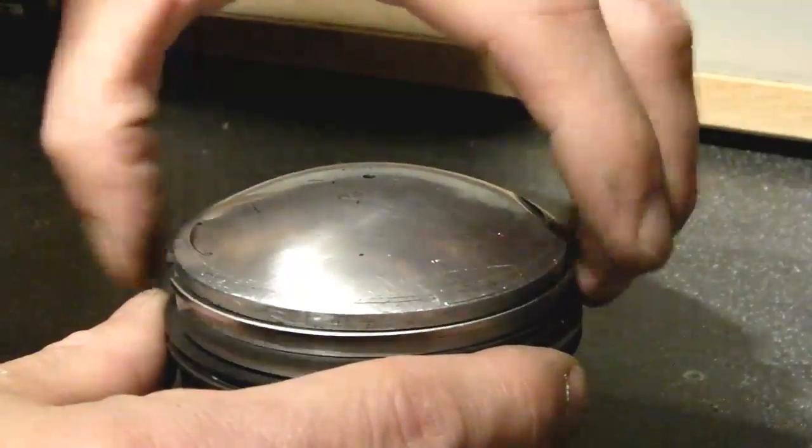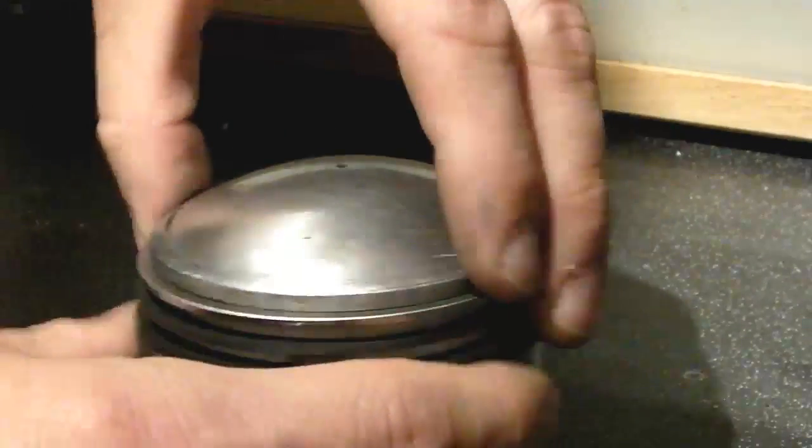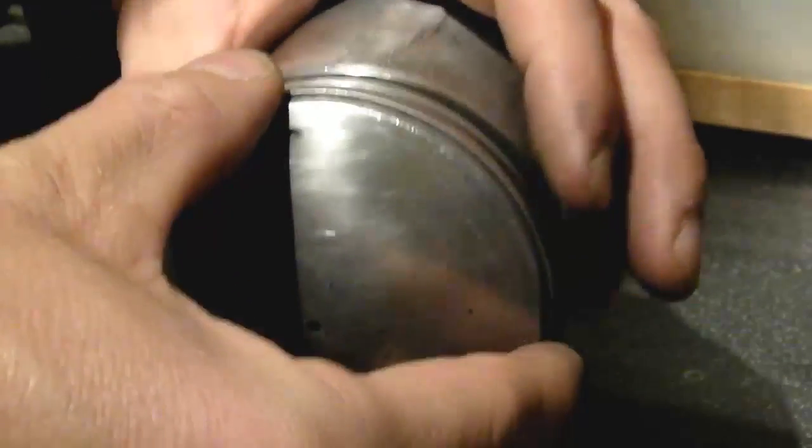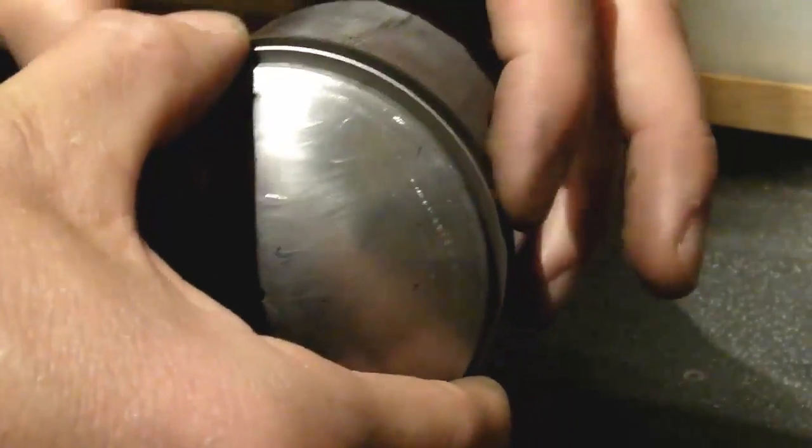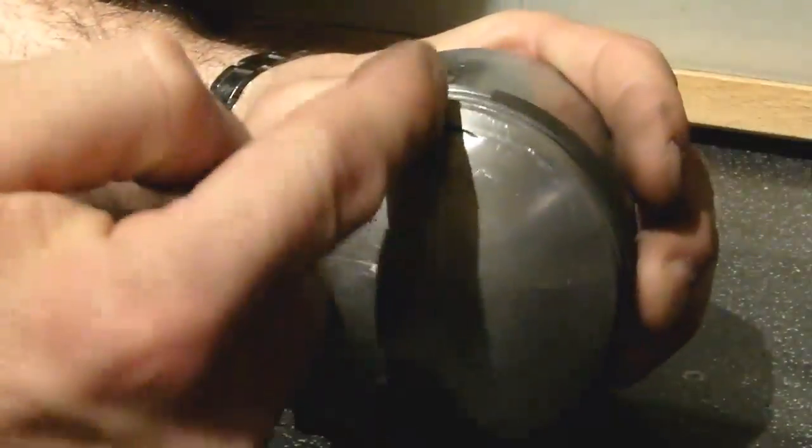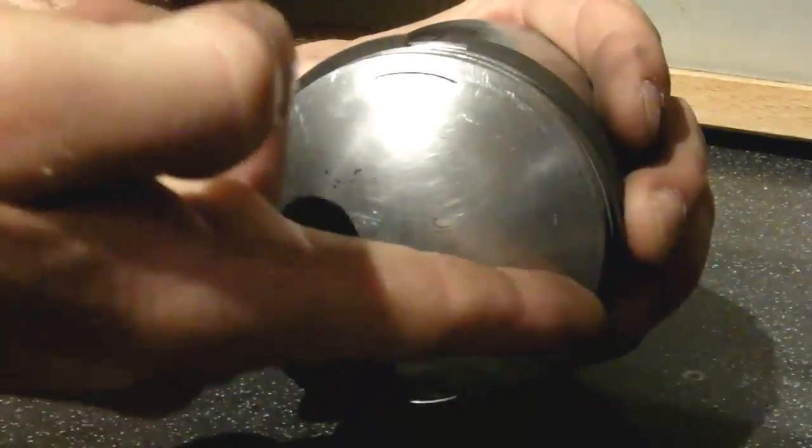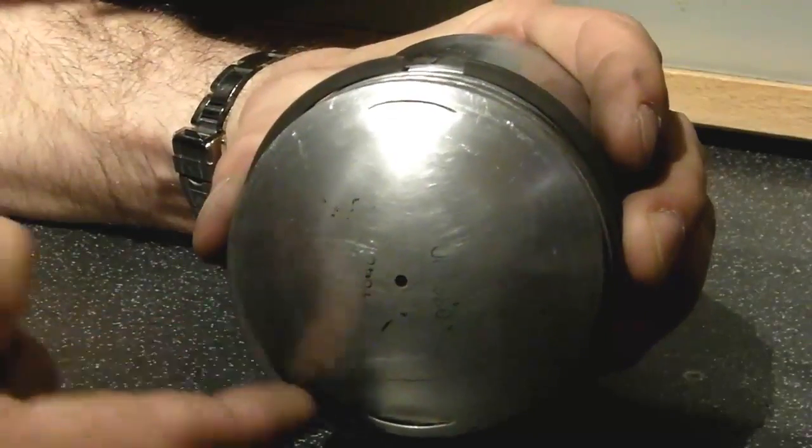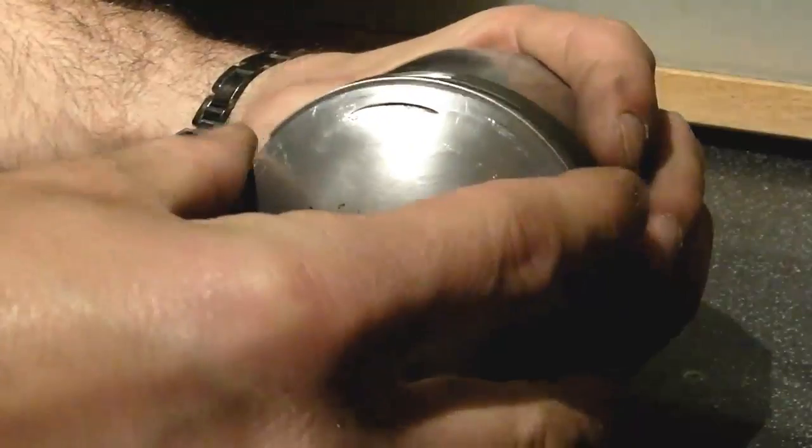When you're spacing the rings, you need to space them so that they are 120 degrees apart. So for example, from a top view, if your oil control ring gap is at the front like so, then the second scraper ring needs the gap here, and then the top ring needs the gap here, so that they are spaced at equal 120-degree intervals from one another.